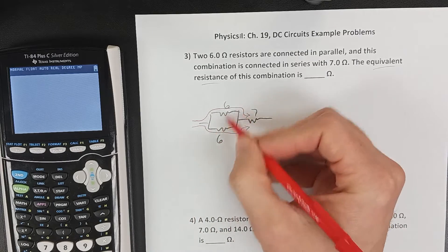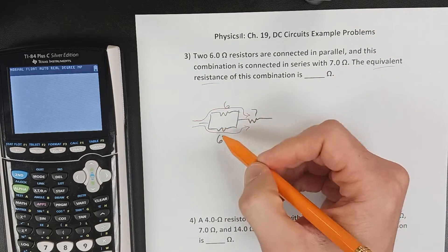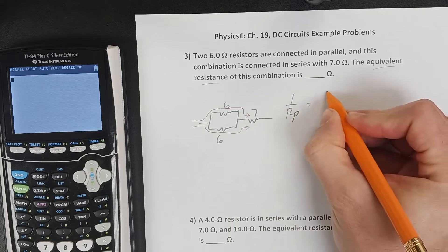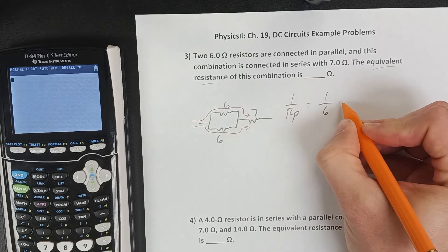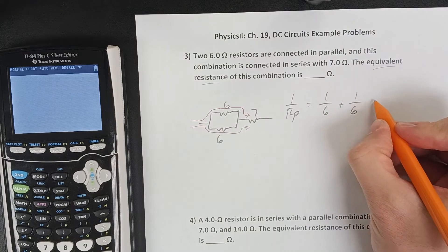So these two, because they're in parallel, we want to combine these two resistances first. And so that rule is for parallel resistors that one over the total resistance equals one over each individual resistance.